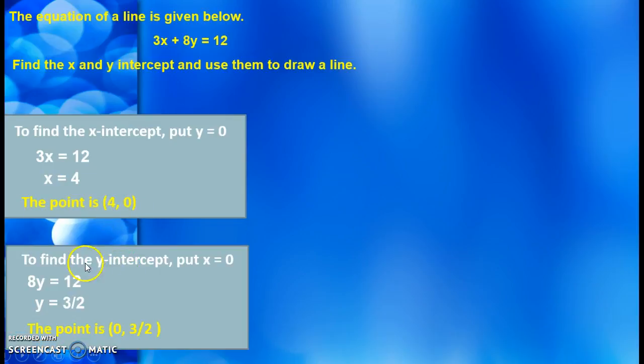To find the y-intercept, let's put x equal to zero. And you get 8y = 12, y = 3/2. And our point is (0, 3/2). Now I have two points.